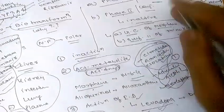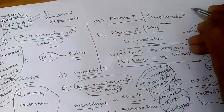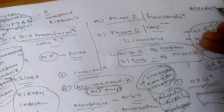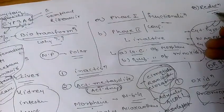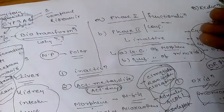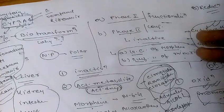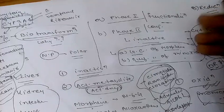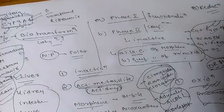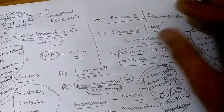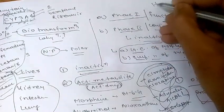The second phase one reaction is reduction, which is the converse of oxidation and also involves cytochrome P450 enzymes working in opposite directions. Drugs metabolized by reduction include alcohols, aldehydes, and quinones. Common examples of drugs reduced include chloral hydrate, chloramphenicol, halothane, and warfarin.